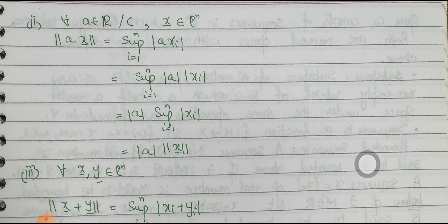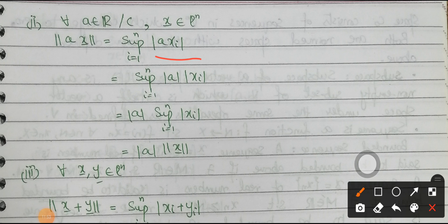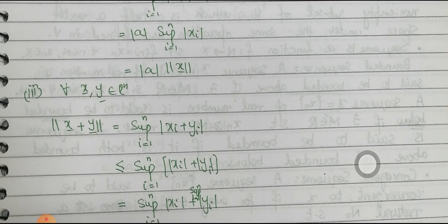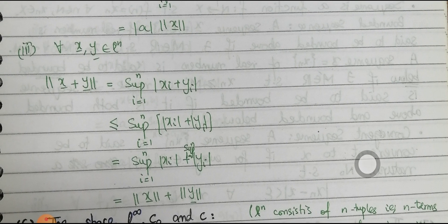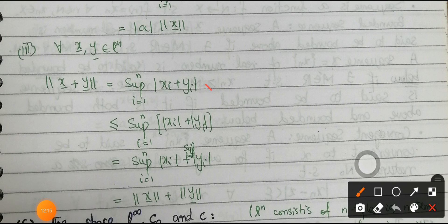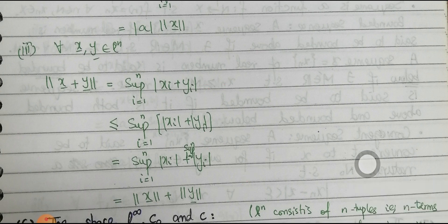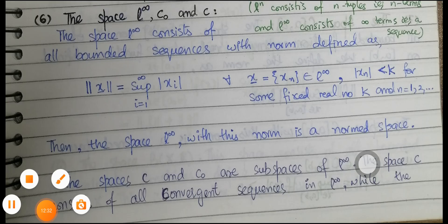For condition 2, for all a ∈ ℝ or ℂ and x ∈ lⁿ∞: ‖ax‖ = sup_{i=1}^{n} |axᵢ| = |a|·sup_{i=1}^{n} |xᵢ| = |a|·‖x‖, so condition 2 holds. For condition 3, taking x, y ∈ lⁿ∞: ‖x + y‖ = sup |xᵢ + yᵢ| ≤ sup(|xᵢ| + |yᵢ|) ≤ sup |xᵢ| + sup |yᵢ| = ‖x‖ + ‖y‖ by triangle inequality. All conditions satisfied.